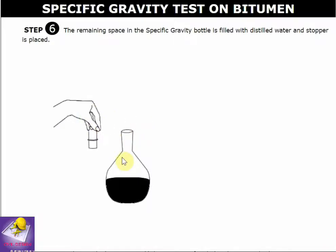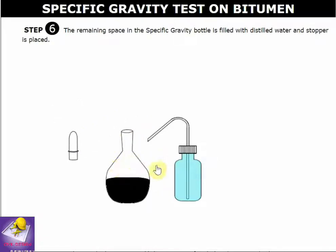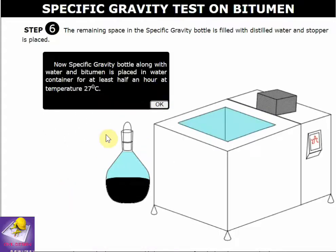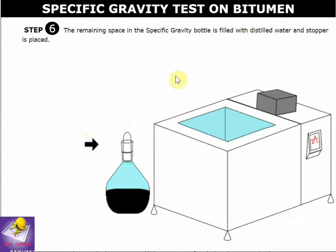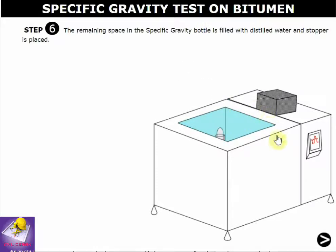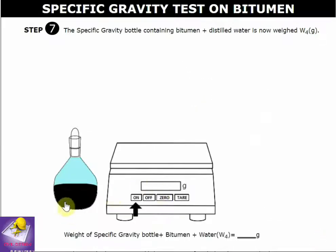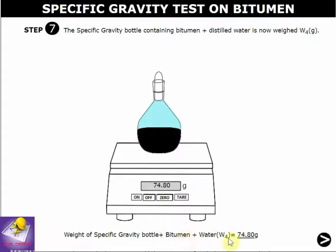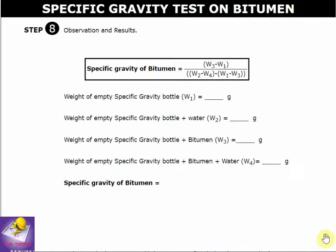Open the stopper and fill the remaining volume of the specific gravity bottle with distilled water. Put the stopper back and place it in the temperature-controlled area at 27 degrees Celsius for 30 minutes. Turn on the machine and tare to zero. The weight of the specific gravity bottle plus bitumen plus water, W4, is 74.8 grams.